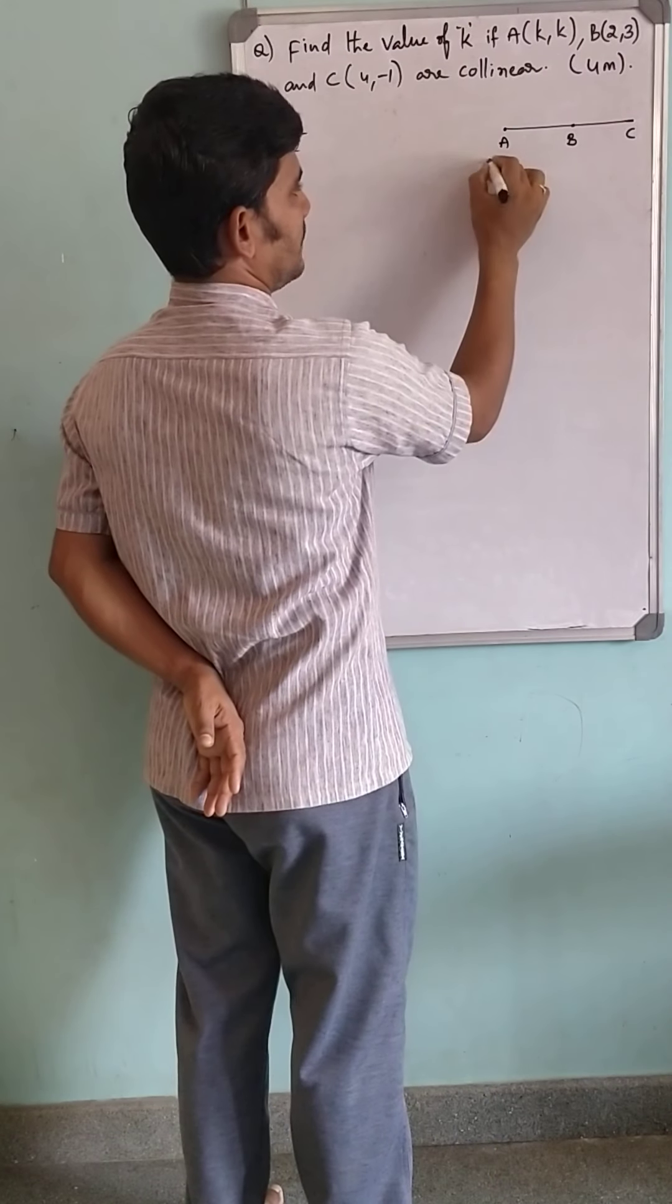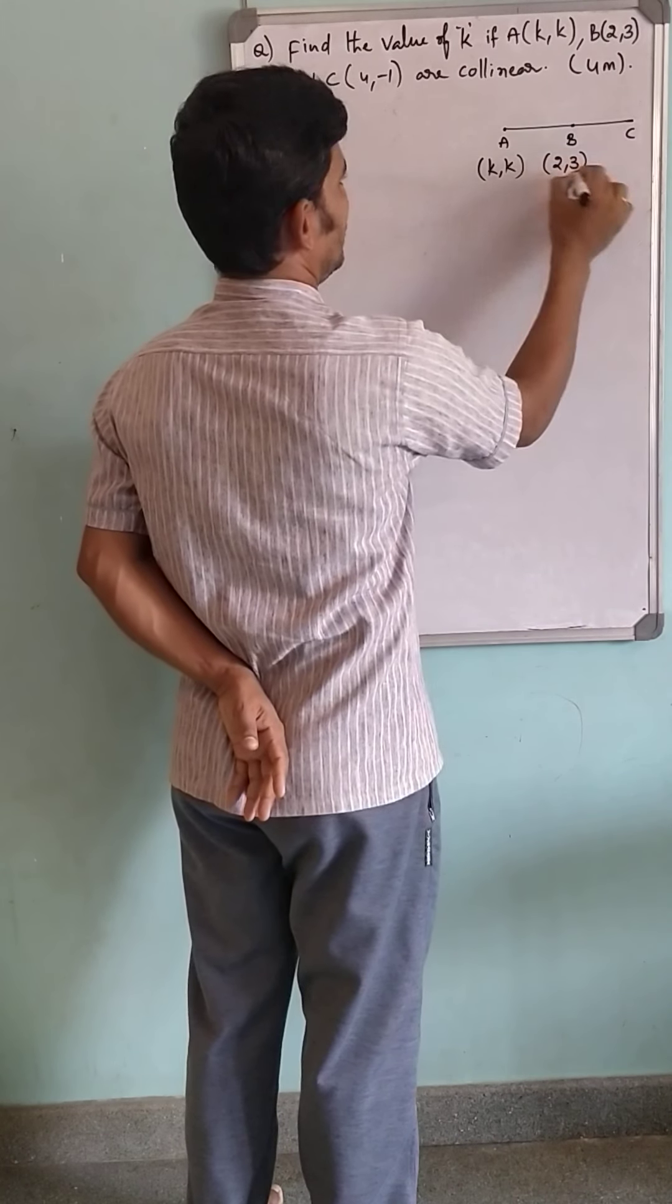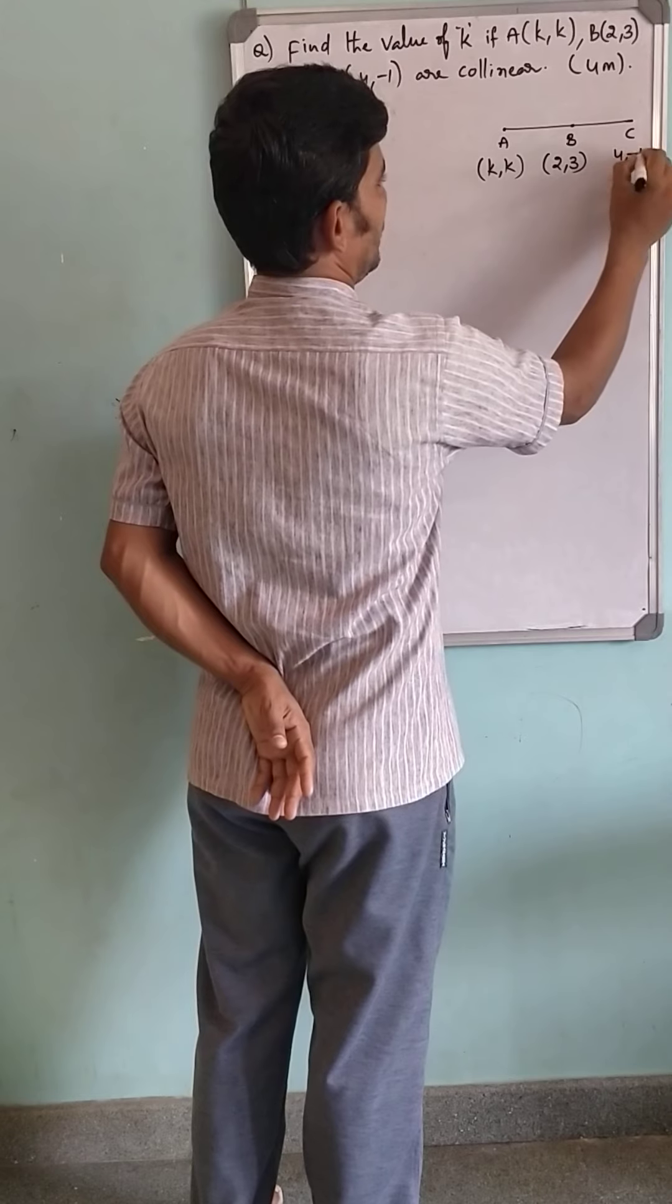These three points: one is (K, K), the other one is (2, 3), and the other one is (4, -1).